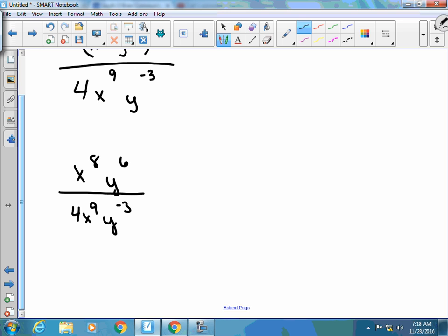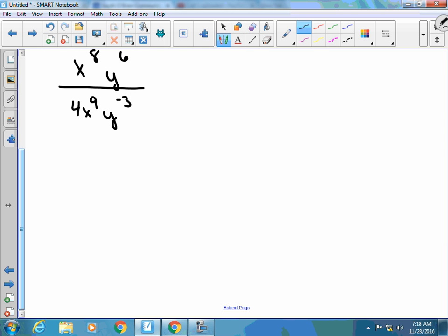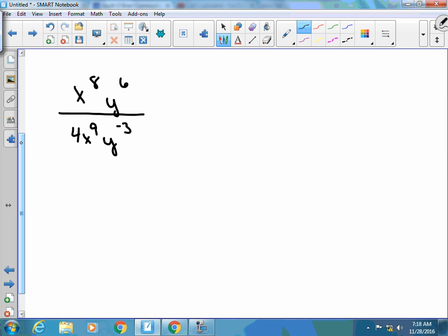So from here, I don't have any of the same base in the numerator, I don't have any of the same base in the denominator, so I can go ahead and use that quotient rule and subtract. Personally, do not deal with the negative exponent until you are at the very end and you have one single variable. So right now, I have two y values, so I'm not going to mess with that negative 3 yet and flip it. It's easier if you just wait until there's only one variable.